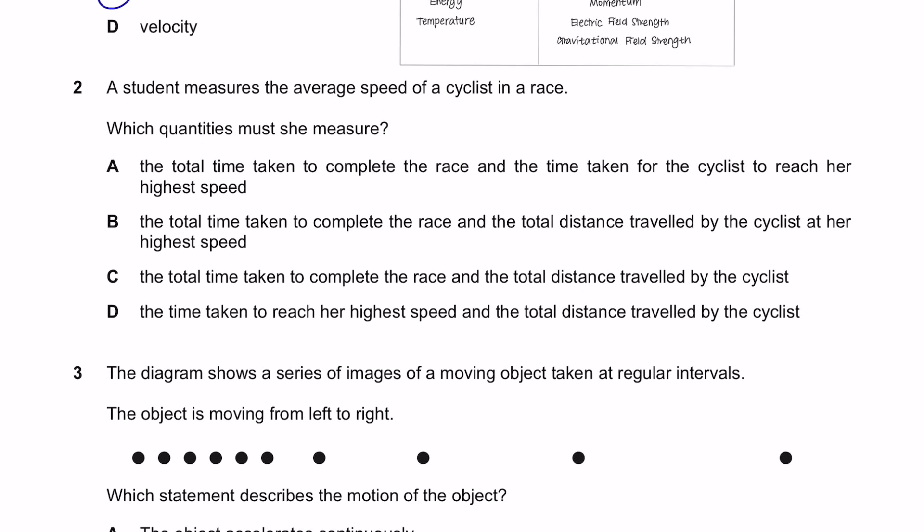Question 2. A student measures the average speed of a cyclist in a race. Which quantities must she measure? To calculate average speed, you're going to need total distance traveled divided by total time taken. So the answer here would be C.